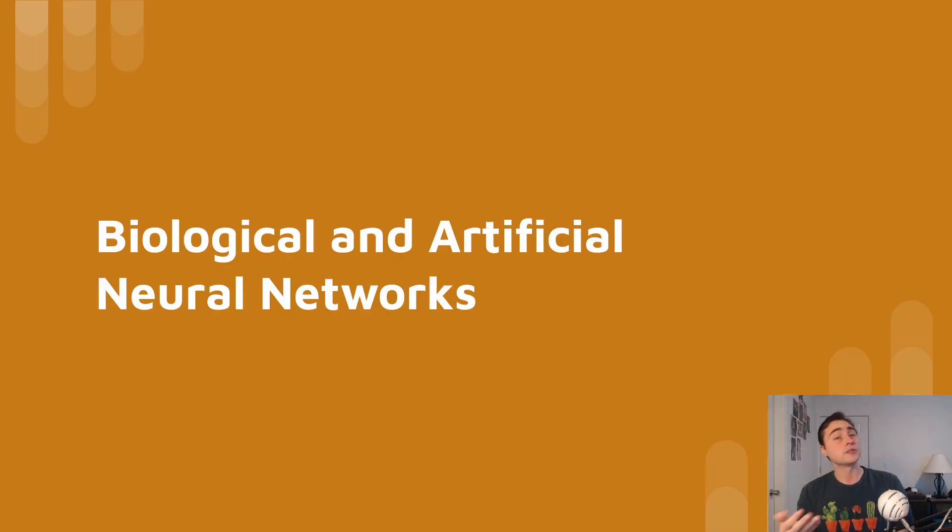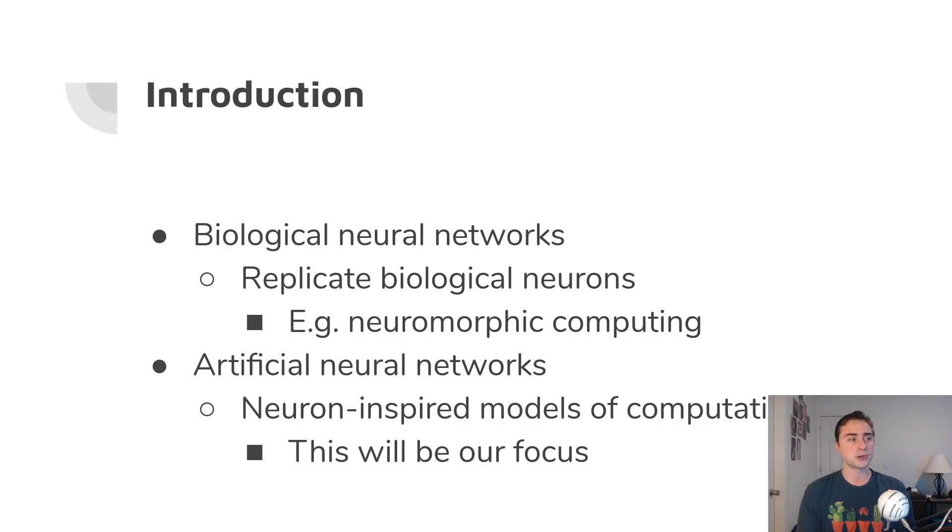First of all, let's talk about the difference between these two different types. We have biological and artificial neural networks. The biological neural networks more faithfully try to replicate biological neurons, and examples of this are things like neuromorphic computing. We have artificial neural networks, which are extremely common today, which instead of trying to faithfully represent a biological neuron, they're more inspired by that style of computation. That's what we're really going to be focusing on for the remainder of this series.